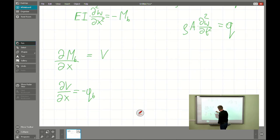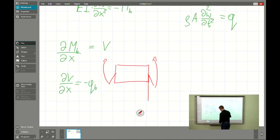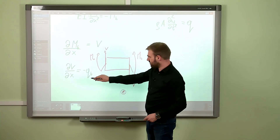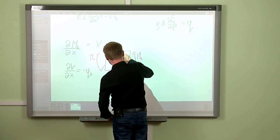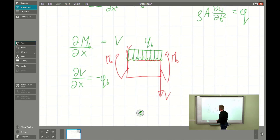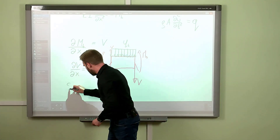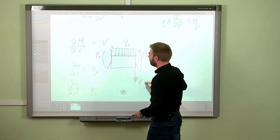For this we need to consider sign conventions. For typical assumptions where the positive bending moment is as shown, we have positive bending moment here and here, positive shear force V, and the uniformly distributed beam load QB faces downward. This is important — it is exactly opposite to our case for the governing equation.